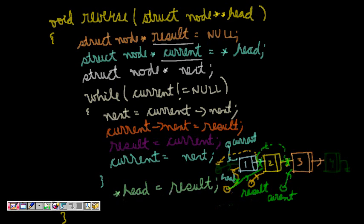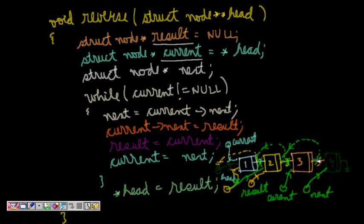Now result is node two and current is node three. The loop runs again. Next is equal to current's next (node four). My aim is to move current's next to the previous one — that is result. So current's next is set equal to result, making node three point to node two. Result becomes current (node three), and current becomes next (node four).